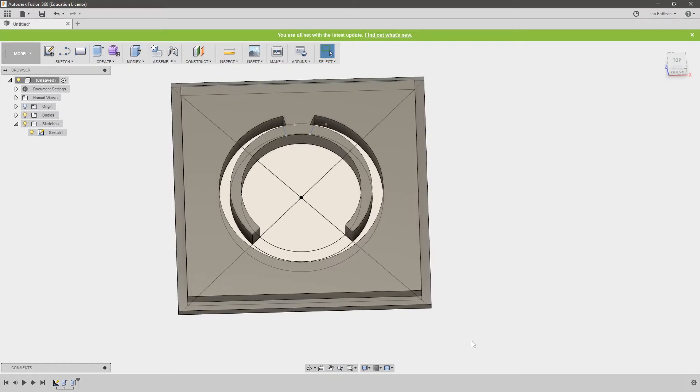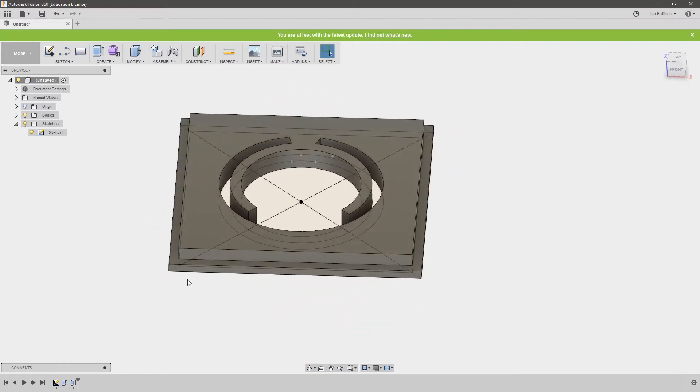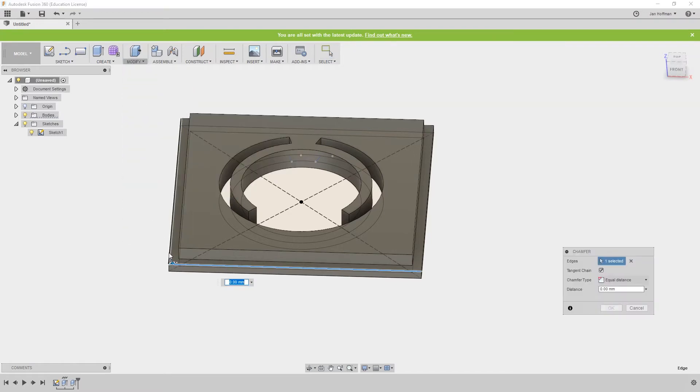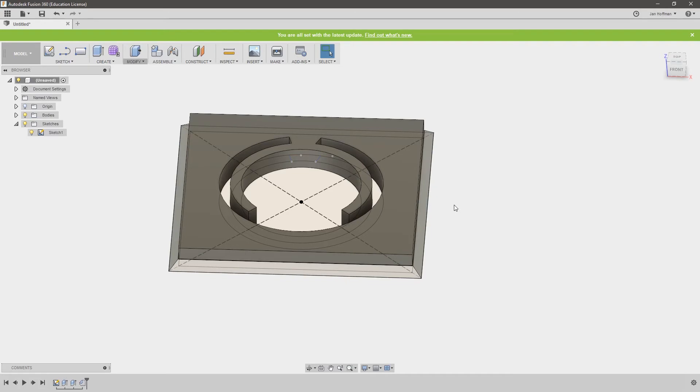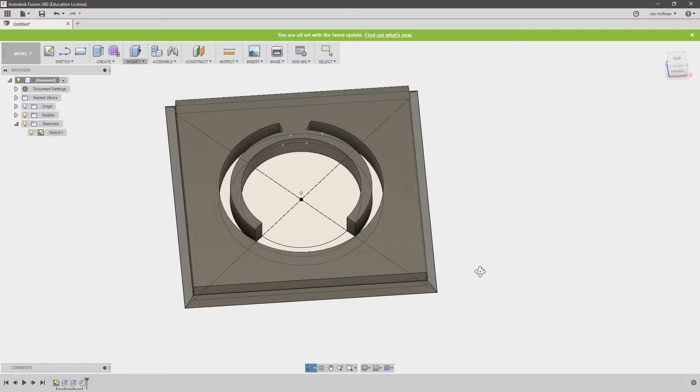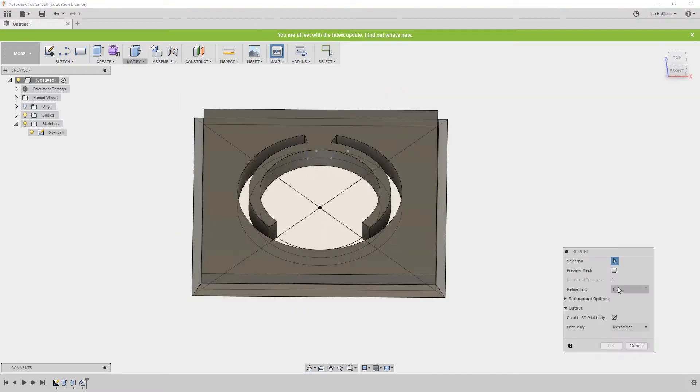And then for that final bit of magic, we'll go to modify, chamfer, select all four sides, and then push that down all the way. And that way we don't even need to figure out some of those angles, everything just happens as it should.